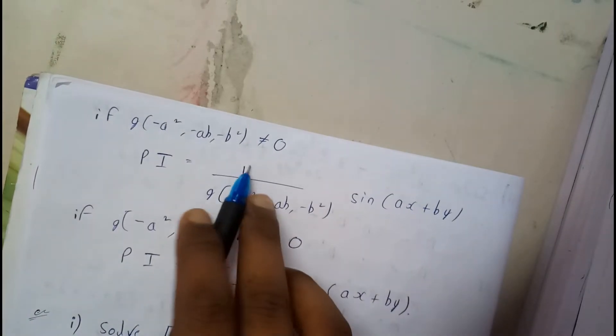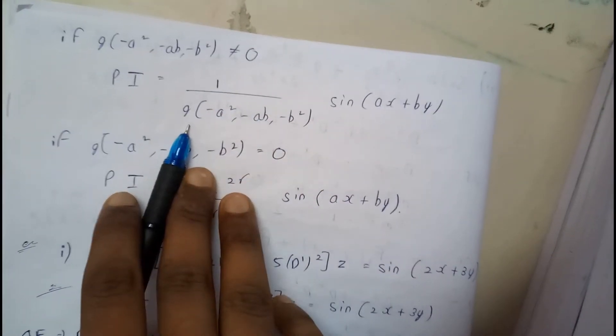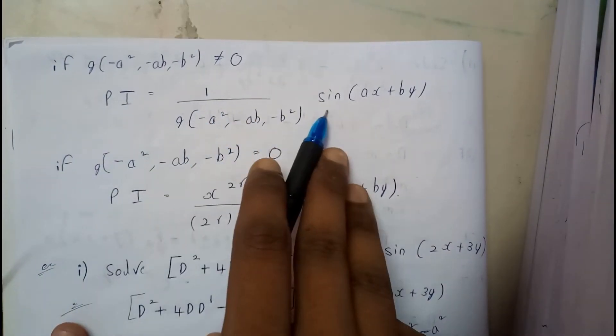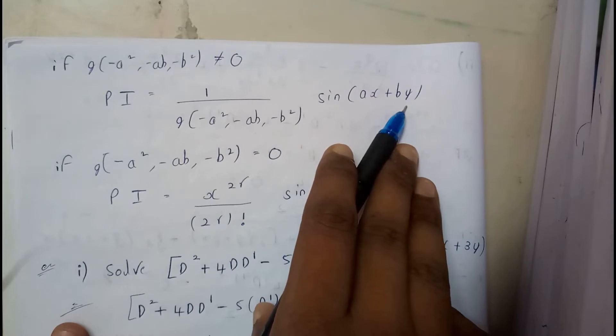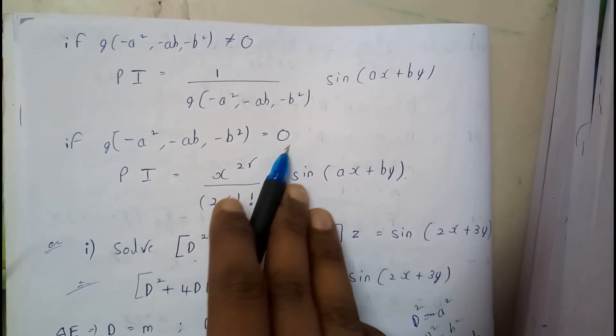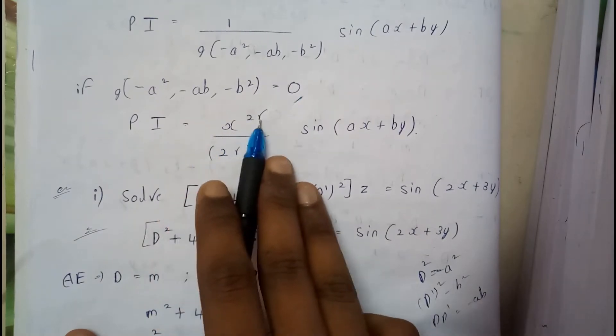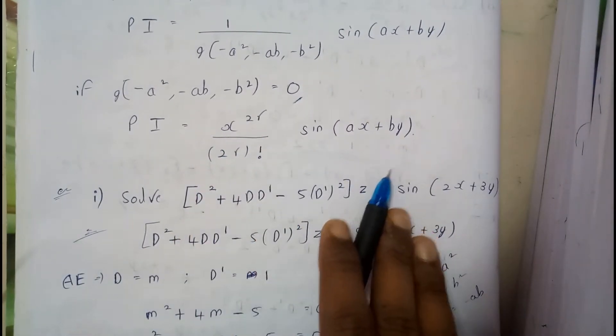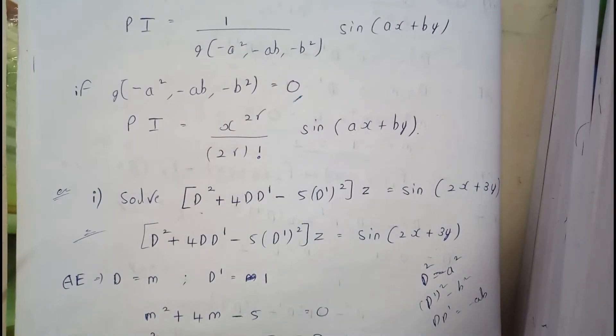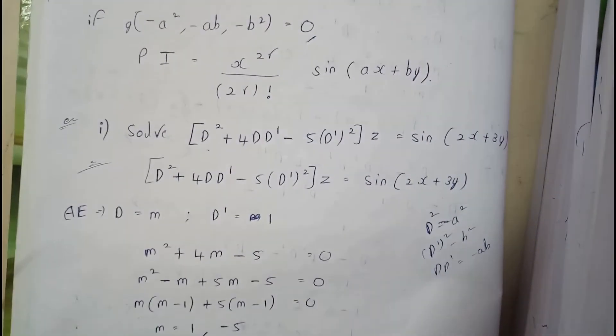Once you substitute the values for D², DD', and D'² — if the denominator is not equal to zero, then the particular integral equals one divided by the given value into sine(ax + by). If the denominator equals zero, then it is x^(2r) divided by (2r)! into sine(ax + by). In the previous model we got x^r / r!, but here it is x^(2r) / (2r)!.